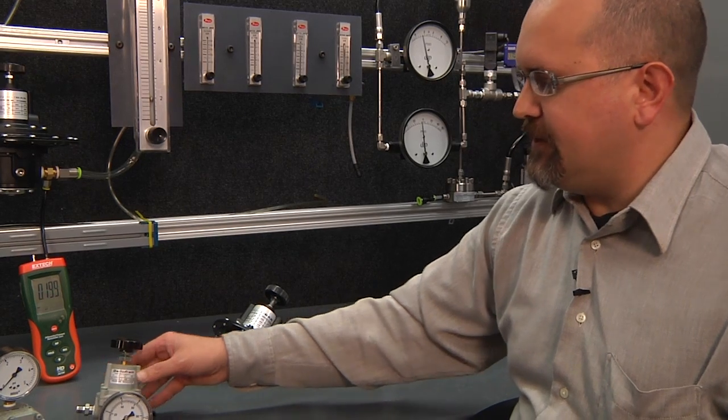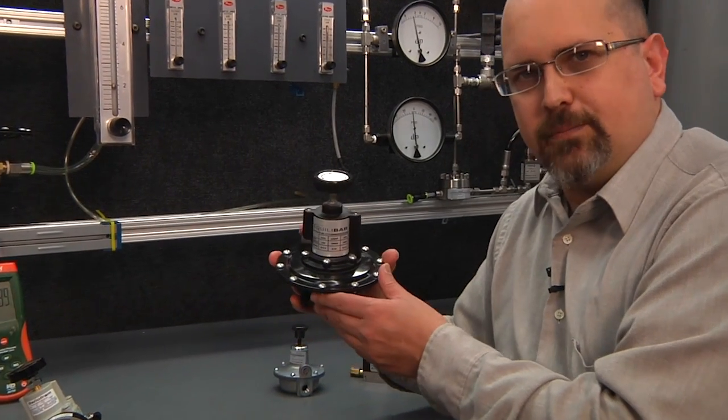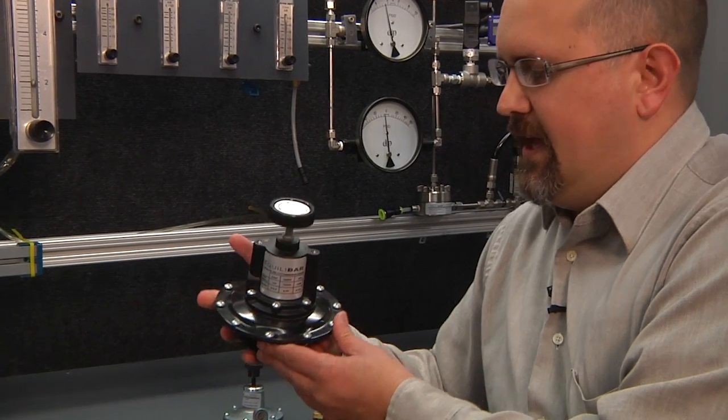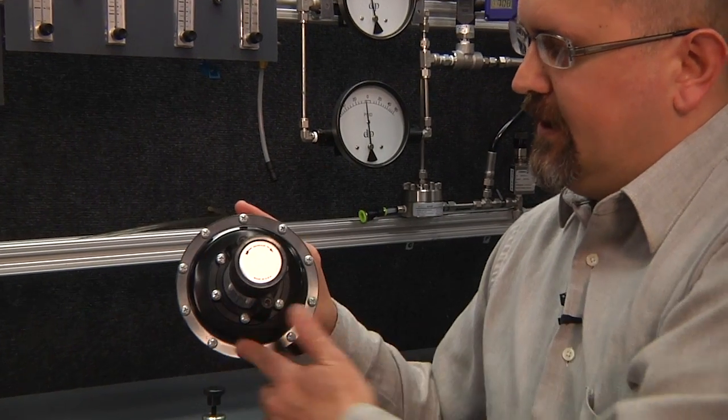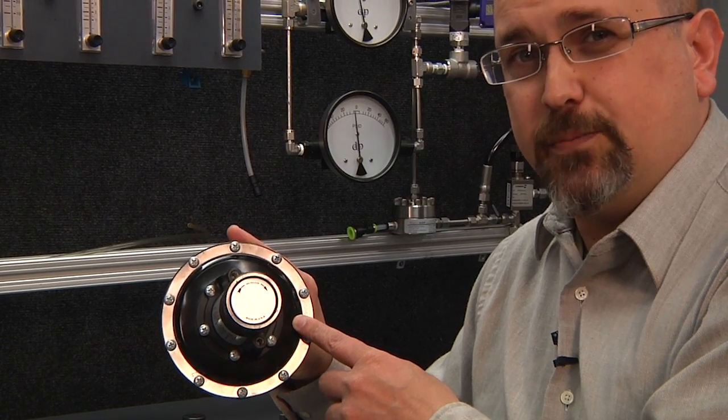What you really need to do is increase that diaphragm surface area as we've done with this Equilibar pressure reducing model. You can see in this model it has a much larger diaphragm sensing area that is able to detect those very low pressures.